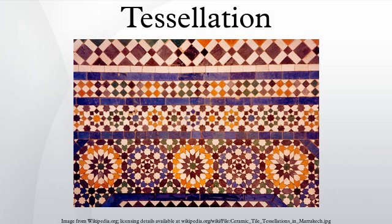For example, a semi-regular tiling using squares and regular octagons has the vertex configuration 4.8². Penrose tilings, which use two different quadrilaterals, are the best known example of tiles that forcibly create non-periodic patterns. They belong to a general class of aperiodic tilings, which use tiles that cannot tessellate periodically, though they have surprising self-replicating properties using the recursive process of substitution tiling. Voronoi or Dirichlet tilings are tessellations where each tile is defined as the set of points closest to one of the points in a discrete set of defining points. The Voronoi cell for each defining point is a convex polygon. The Delaunay triangulation is a tessellation that is the dual graph of a Voronoi tessellation. Delaunay triangulations are useful in numerical simulation, in part because among all possible triangulations of the defining points, Delaunay triangulations maximize the minimum of the angles formed by the edges.